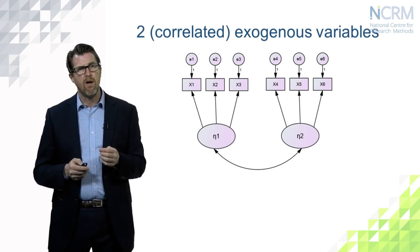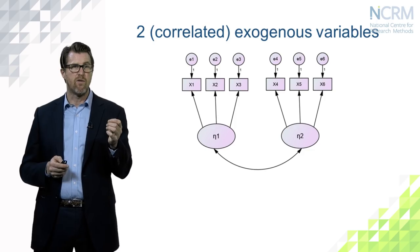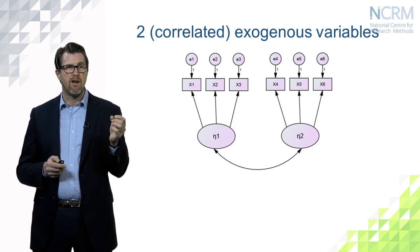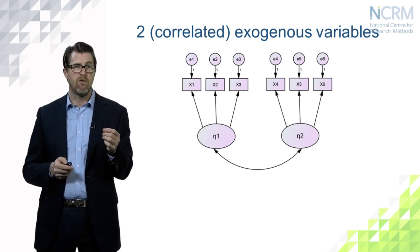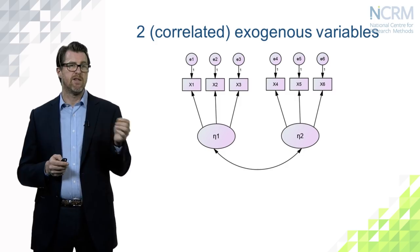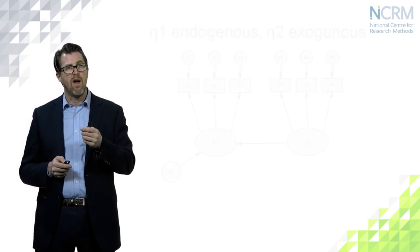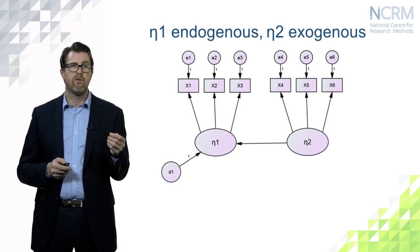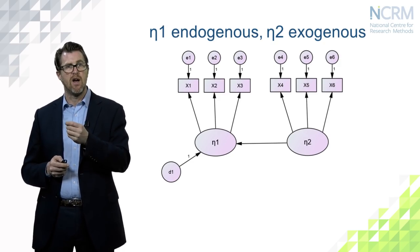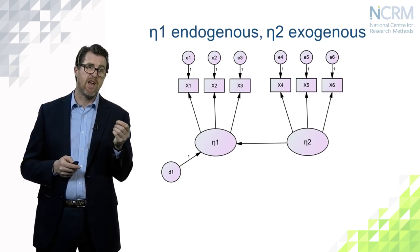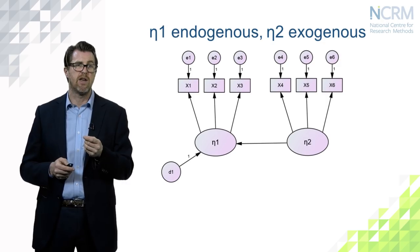In the first path diagram with a curved arrow, both latent variables are exogenous because there is no directional path pointing into either of them, and neither has an error term. In the second path diagram with a directional arrow, eta1 is endogenous and eta2 is exogenous: eta2 has no direct paths going into it and no error term, whereas eta1 has an error term because a directional path runs from eta2 into it.